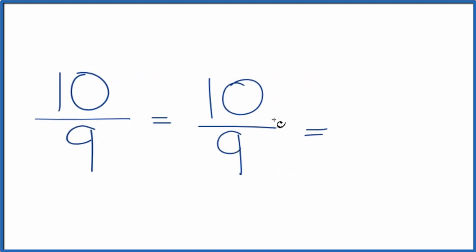So 9 goes into 10 one time with 1 left over. And we just bring the denominator across. And 10 ninths, the improper fraction, that equals the mixed number 1 and 1 ninth.